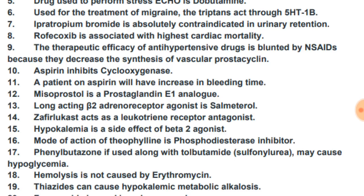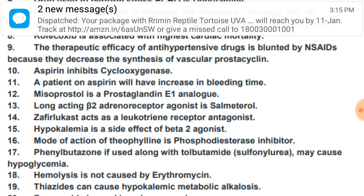Theophylline is a phosphodiesterase inhibitor. Phenylbutazone, if used along with tolbutamide (a sulfonylurea), may cause hypoglycemia — phenylbutazone may aggravate the hypoglycemia that is already a side effect of sulfonylureas.